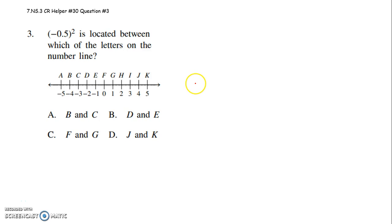Seventh graders, this is to help you with question 3 on CR30. It says negative 0.5, that quantity squared, is located between which of the letters on the number line?